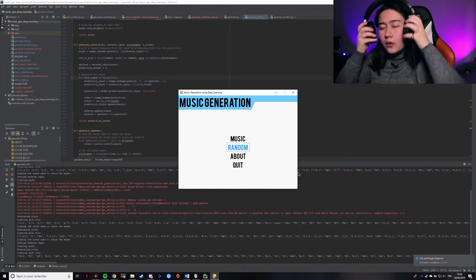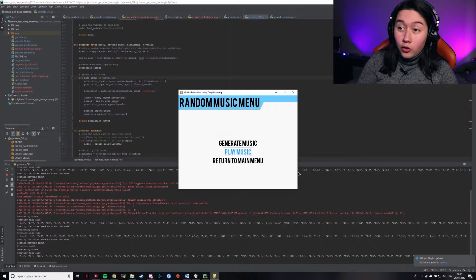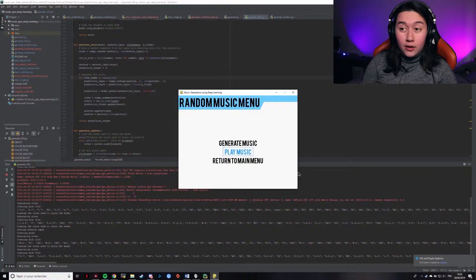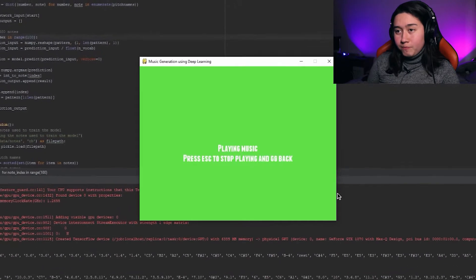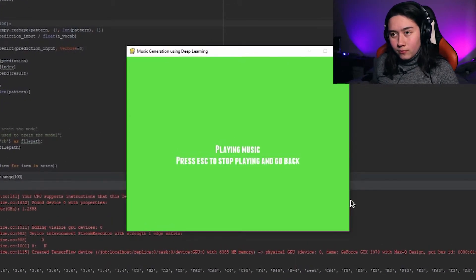We can actually compare that to some fully random music, which we will generate right now. So the way this music is generated is by picking notes at random from all the notes seen while parsing the input training dataset, which is all the Bach pieces that we're training our model on.